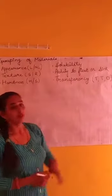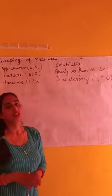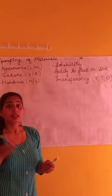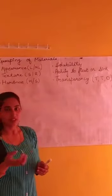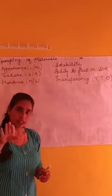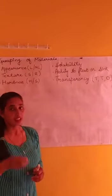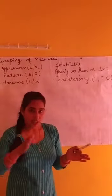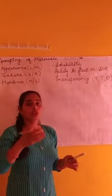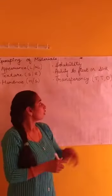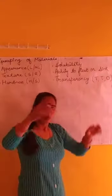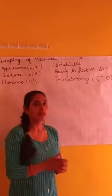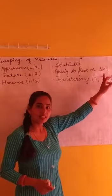The next property is the ability to float or sink. If I put some object on water, it will either float or not. For example, if I put a piece of paper on water, it will float. But heavier objects will sink.